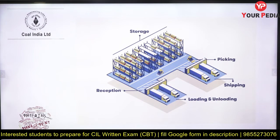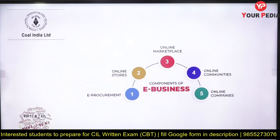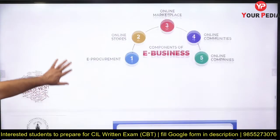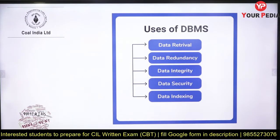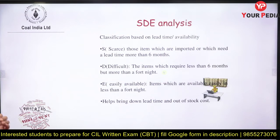Warehousing planning — entire planning of warehousing covering storage, reception, loading, unloading, and shipping — is another important domain. E-business and e-procurement are important topics in Coal India material management. DBMS is also important as computer terminology is included in the syllabus — topics like operating systems, DBMS, data mining, data warehousing, and data redundancy. SDE analysis: S is Scarce, D is Difficult, E is Easily available — classifying inventory based on availability. If something is scarce and takes six months to procure, it should be kept in inventory.